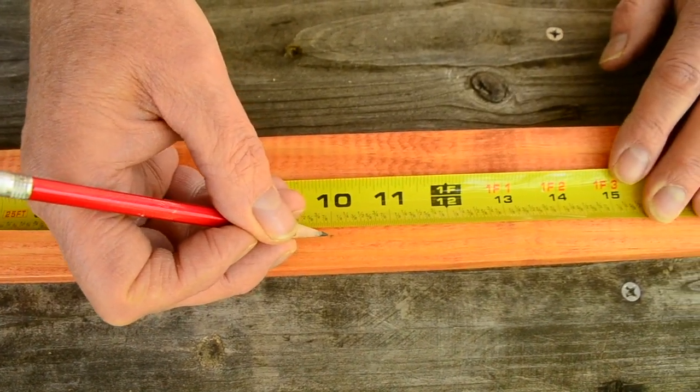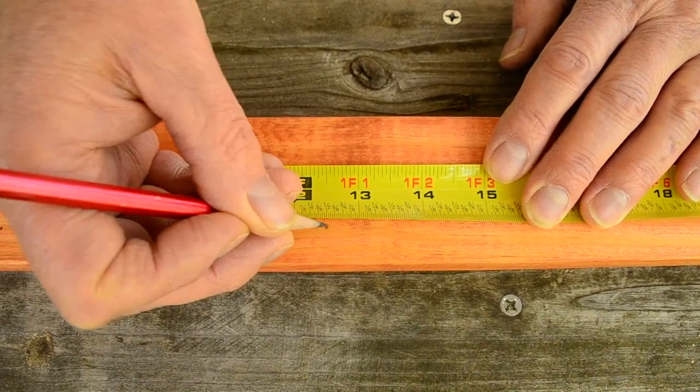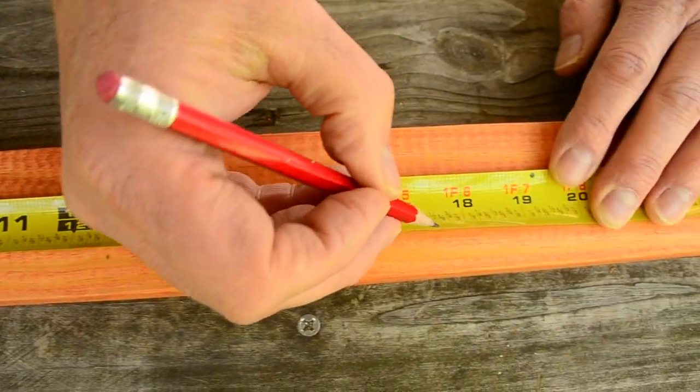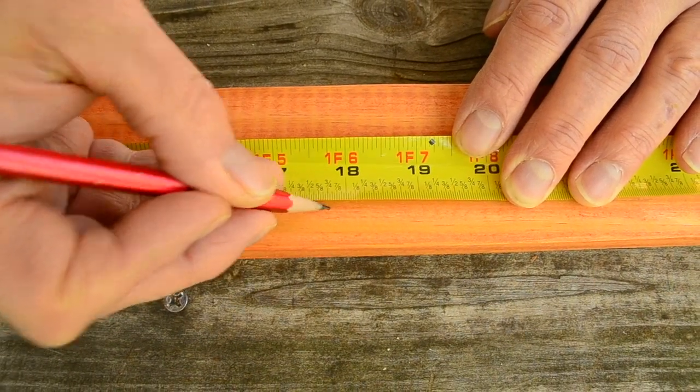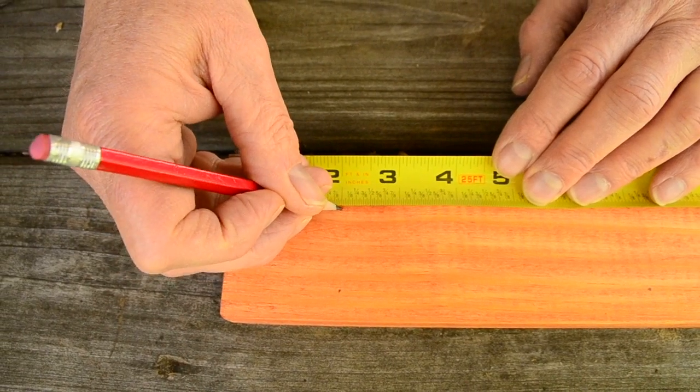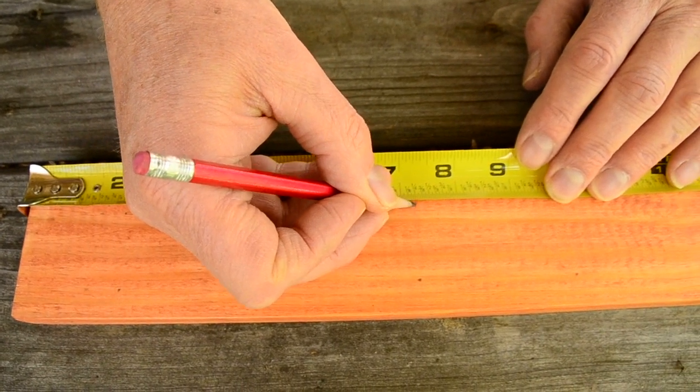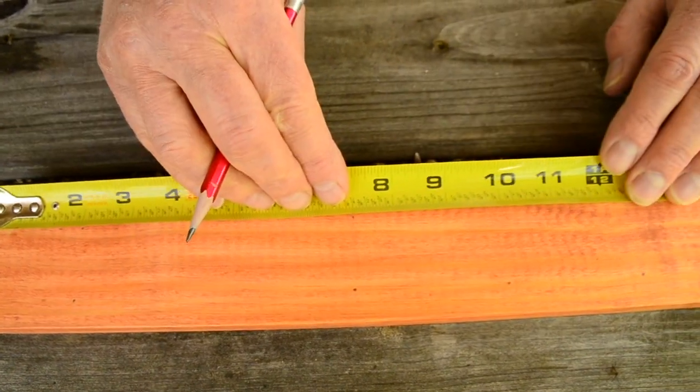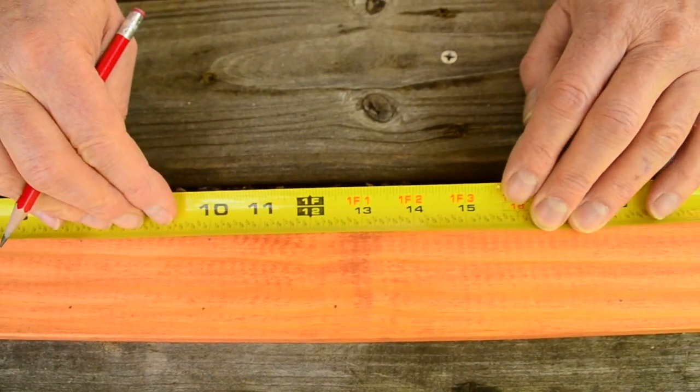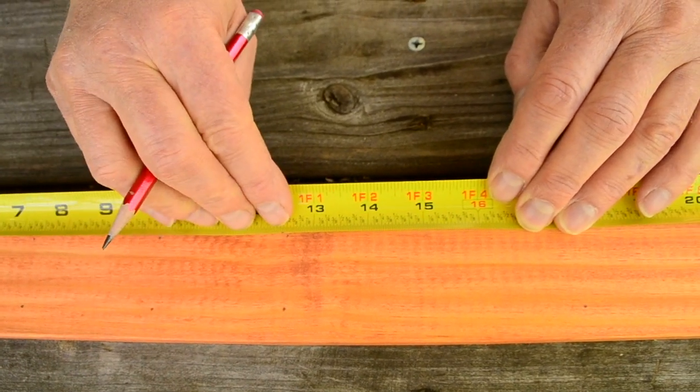twelve and a half inches, and seventeen and three quarter inches. And we will come a half inches in from the long side and do the same making marks at two inches, seven and a quarter inches, ten inches, twelve and a half inches, and seventeen and three quarter inches.